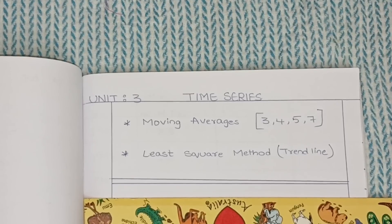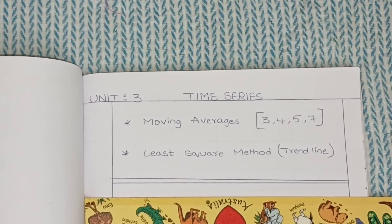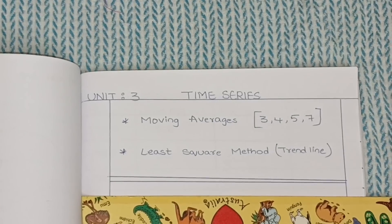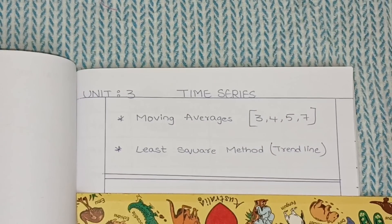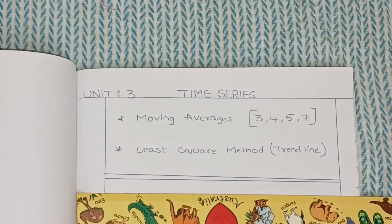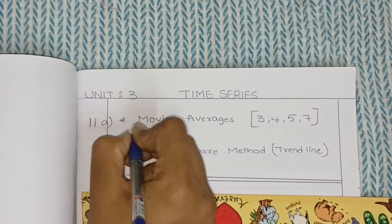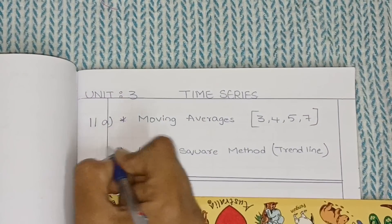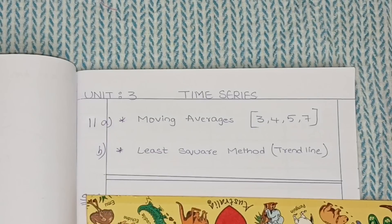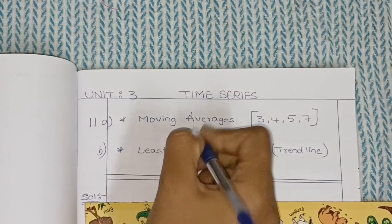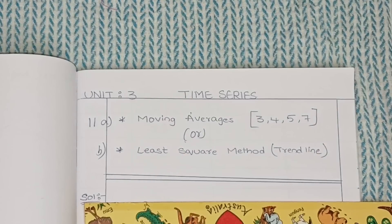Hello all, welcome back to our channel. Students, from unit number three in business statistics 2, we will have time series. In time series you will have two methods: first one is moving average method, second one is least square method. Level A questions will definitely come from moving averages and level B questions will come from least square method, so all options will be there.